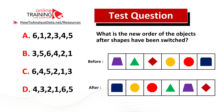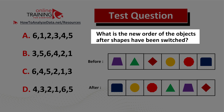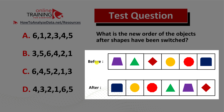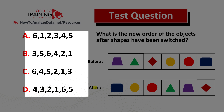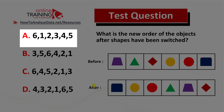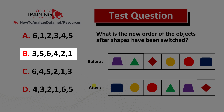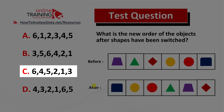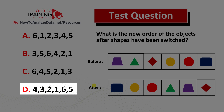Here is the tricky question from the real test. What is the new order of the objects after shapes have been switched? You're presented with two sets of objects — before and after. Before has six objects and after has the same objects in a different order. Your four choices are: choice A: 6 1 2 3 4 5; choice B: 3 5 6 4 2 1; choice C: 6 4 5 2 1 3; and choice D: 4 3 2 1 6 5.